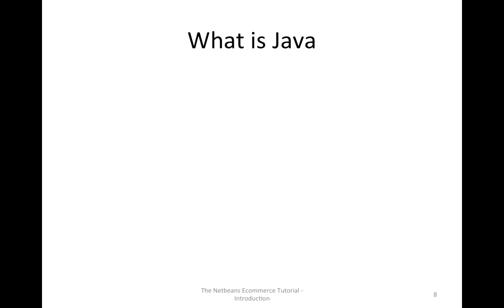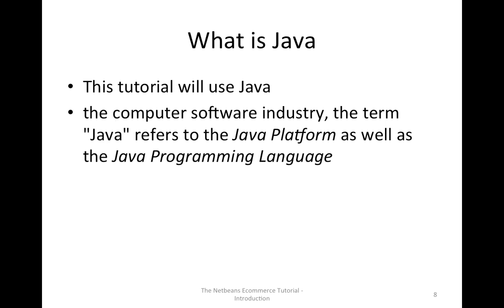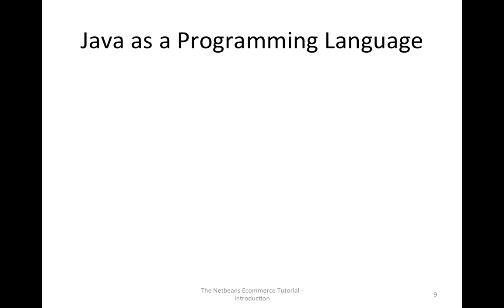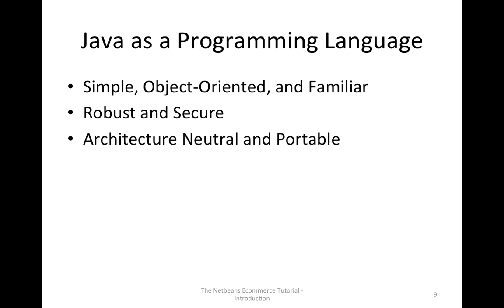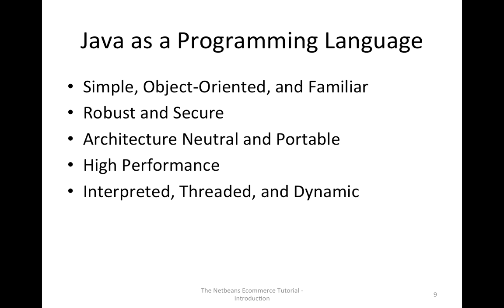We will use Java to develop this eCommerce application. What is Java? In the computer software industry, the term Java refers to the Java platform as well as the Java programming language. Java as a programming language has the following characteristics: it is simple, object-oriented, and familiar because it is originally similar to C++ developed from there. It is robust and secure, architectural neutral and portable. It has high performance, and it is interpreted, threaded, and dynamic.